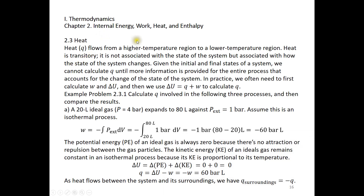Chapter 2: internal energy, work, heat, and enthalpy. Section 2.3: heat. Heat flows from a higher temperature region to a lower temperature region. Heat is transitory — it is not associated with the state of the system, but with how the state of the system changes. If we are given the initial and final states of a system, there is no way to calculate the amount of heat Q until more information about the entire process is provided.